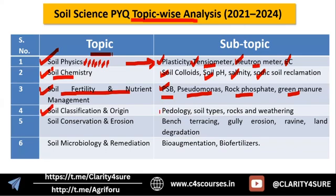Next is soil classification and origin. In soil classification, the concepts of pedology and edaphology — which we often confuse — are really necessary to understand. Then soil types, major soils of India, and problematic soils of India are covered. Rocks and weathering is also important — for example, which of the following is or is not a sedimentary rock. You need to understand the classification of different rocks and remember two to three important examples for each type.